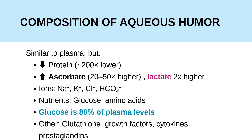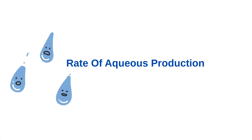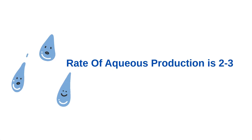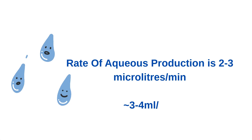Apart from that, aqueous humor contains glutathione, various growth factors, cytokines, prostaglandins, and so on. The rate of aqueous production is about 2 to 3 microliters per minute, which comes to about 3 to 4 ml per day.